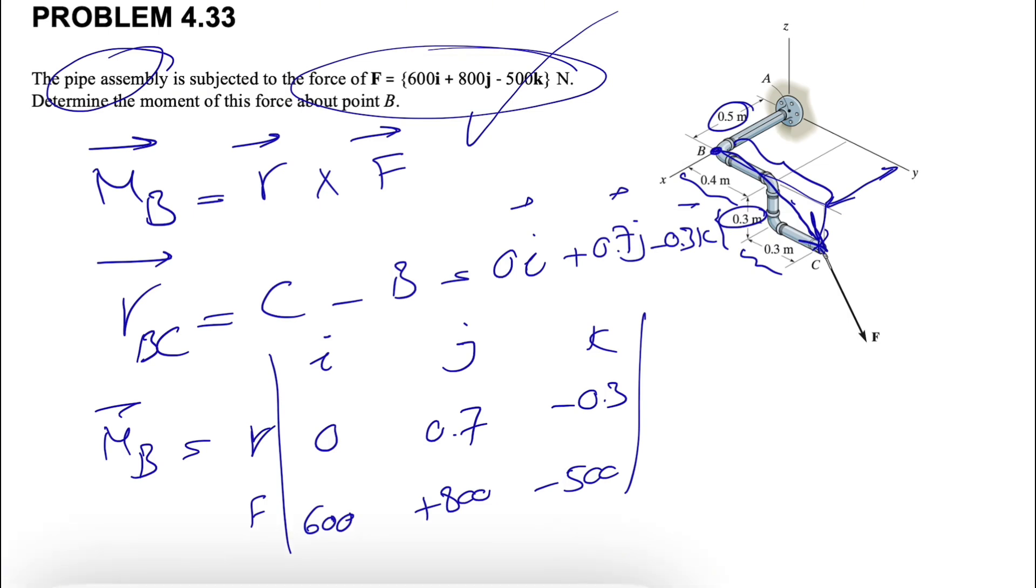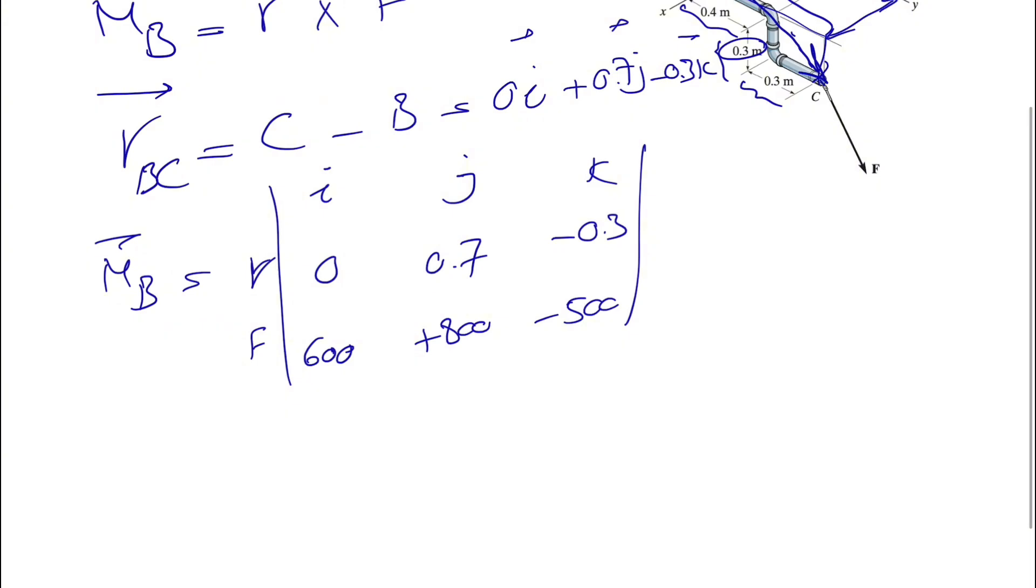And the rest of this will be finding this determinant. And if you want to do that for I component, we cover the I column and we have 0.7 times -500 minus -0.3 times 800. That would be our I.